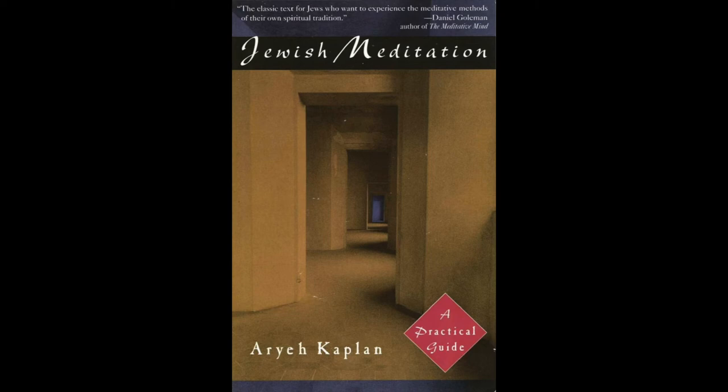Here, too, you can use contemplation as an introduction to visualization. If you find it difficult to visualize the Tetragrammaton, spend a number of days contemplating the name written on a sheet or card. You can spend the first half of a session contemplating the written name and the other half visualizing it with eyes closed. Eventually, you will be able to visualize it without using the card at all. Once you become adept at visualizing the name, you can use it for the simple Yehud discussed in the last chapter.